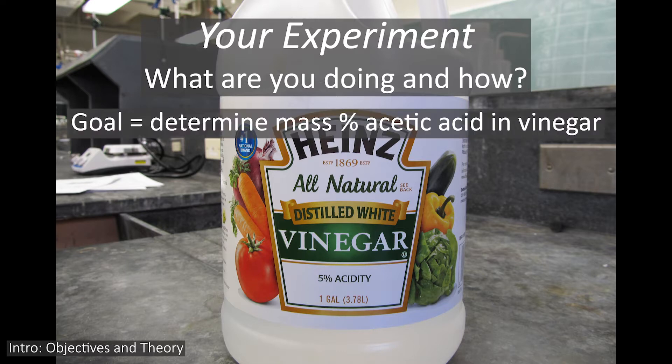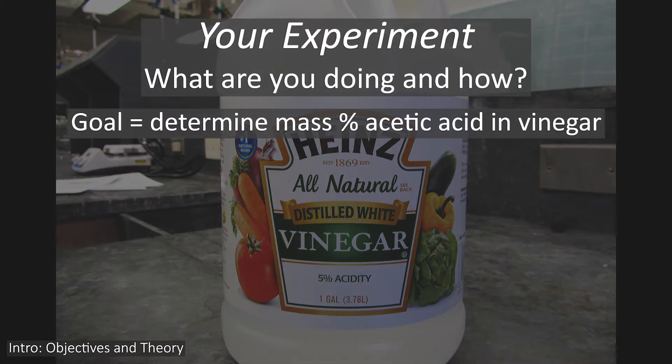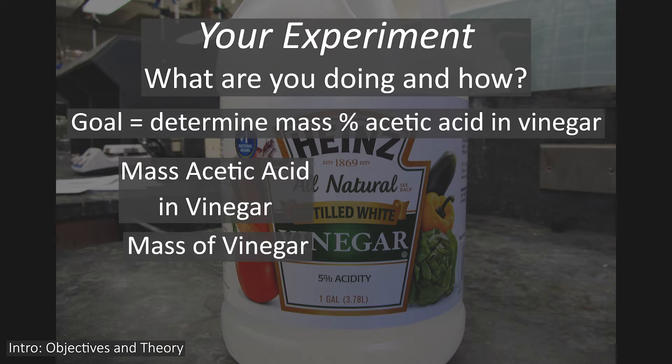Your goal is to determine the mass percent of acetic acid in vinegar. To do this, you are first going to determine the mass of a given volume of vinegar. You will then determine the mass of acetic acid in that same volume. If you then divide the mass of acetic acid by the mass of the vinegar and multiply by 100%, you will get the acetic acid's mass percent.